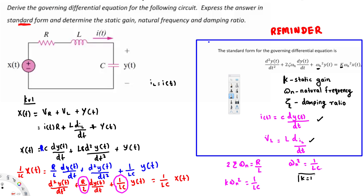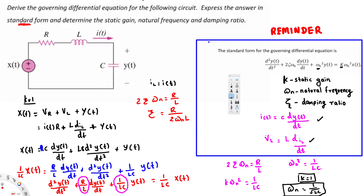Since K = 1 and ω_n² = 1/LC, the natural frequency is ω_n = 1/√(LC). For the damping ratio, we use 2ζω_n = R/L, rearranging to ζ = R/(2ω_n·L). Substituting ω_n = 1/√(LC), the 1/√(LC) flips to become √(LC) in the numerator.